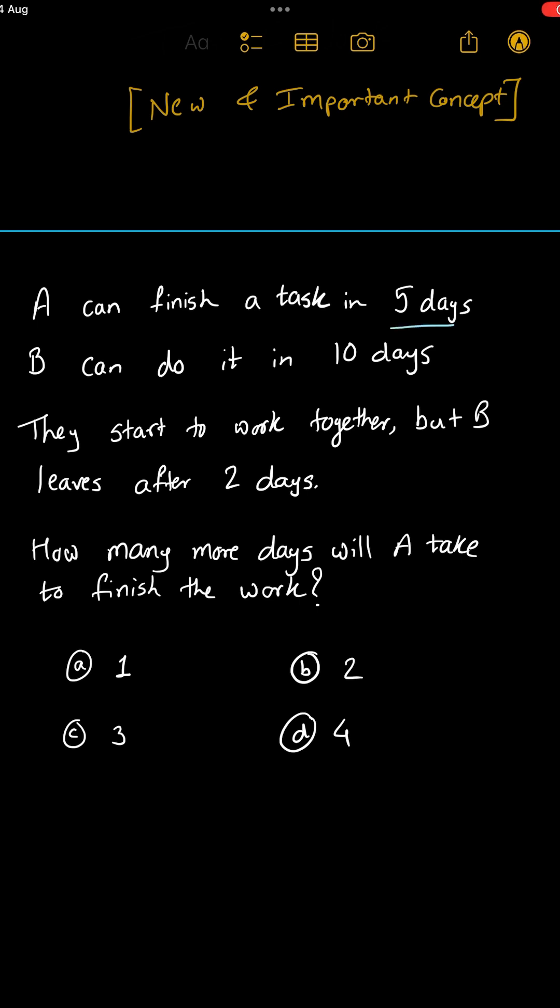A can finish a task in 5 days. B can do it in 10 days. They start to work together but B leaves after 2 days. How many more days will A take to finish the work?